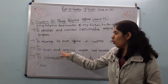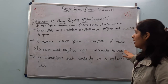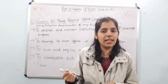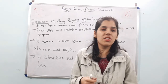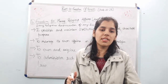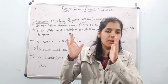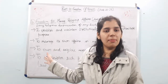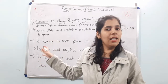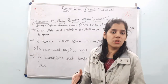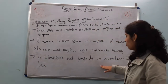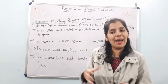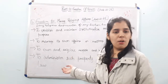Under Article 26, a religious denomination can also own and acquire movable and immovable property. Movable property refers to religious items that can be moved from one place to another, while immovable property refers to things like a temple construction that cannot be moved. Such property can be acquired by the religious institution.